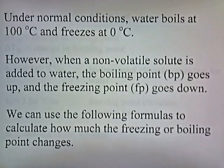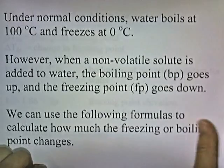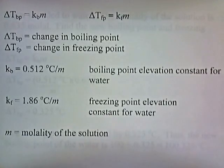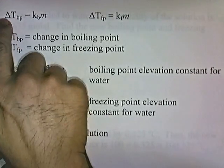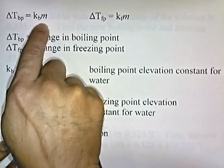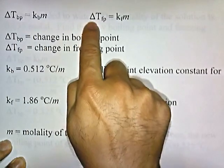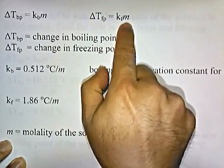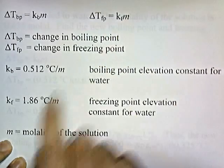We can use the following formulas to calculate how much the freezing or boiling point changes. The change in temperature of the boiling point is KB times molality. The change in temperature of the freezing point is KF times molality.